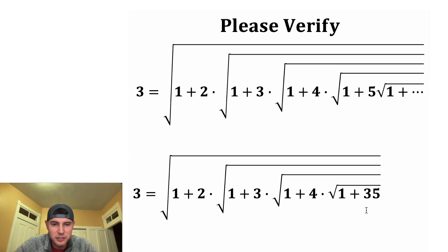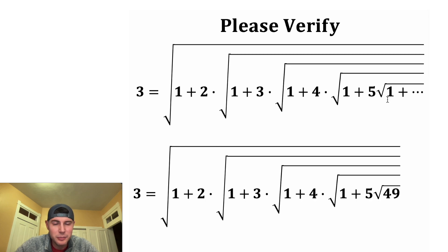So we need 5 times something. So let's rewrite the 35 as 5 times 7. And then we need another square root. So let's make 7 the square root of 49. And then we can continue the pattern by making this 1 plus 48 and so on.